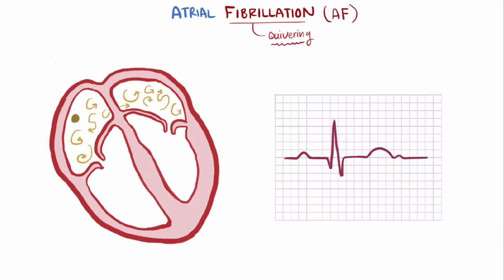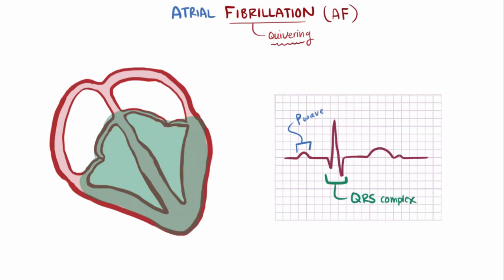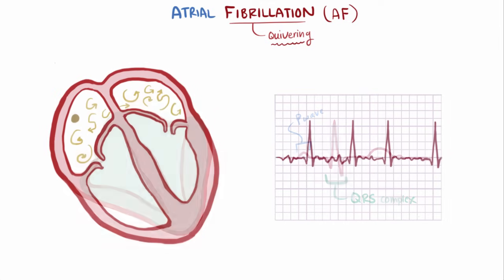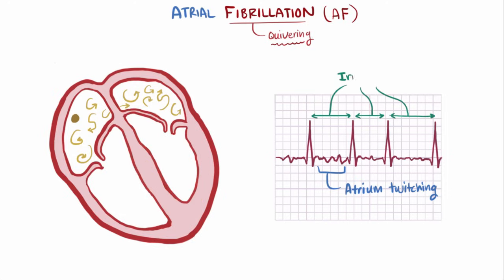On an electrocardiogram or ECG, normally the P wave corresponds to the atrial contraction, which is followed shortly after by the QRS complex, which is the ventricular contraction. During AF, all these small areas are contracting at different times, so you end up with this scribble sort of looking ECG, each little peak corresponding to one spot in the atria twitching. Sometimes a signal from one of these areas may get down to the ventricles and cause ventricular contraction. These contractions and QRS complexes are interspersed at irregular intervals, usually at fairly high rates between 100 and 175 beats per minute.